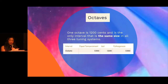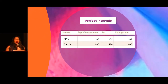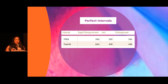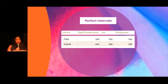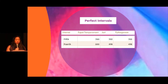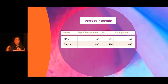And in the diagram, you'll see that 1,200 cents is the same for equal temperament, just, and Pythagorean. The perfect fifth, if you recall from the harmonic chart, is 2 cents greater — 702 cents for both just and Pythagorean tuning systems. The perfect fourth is the opposite: 2 cents smaller. In equal temperament there are five semitones in a perfect fourth, giving us 500 cents. In just and Pythagorean, we subtract 2 cents and get 498 cents.